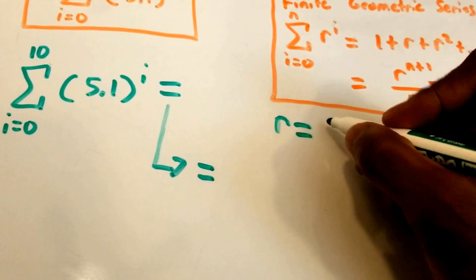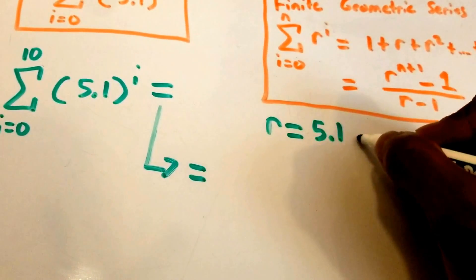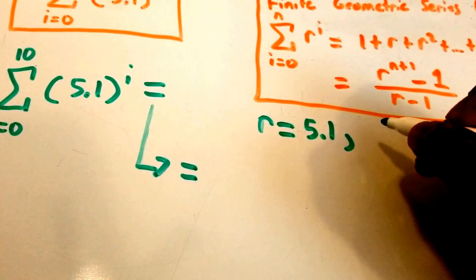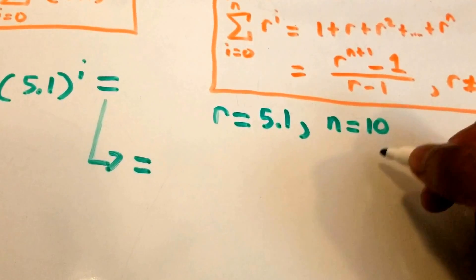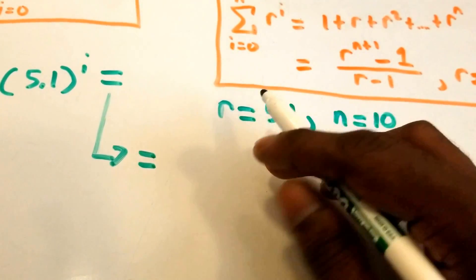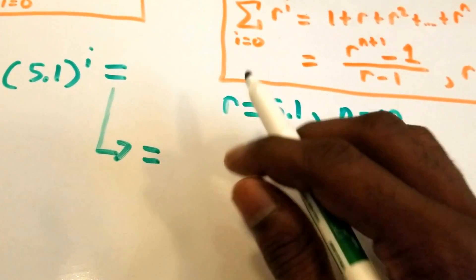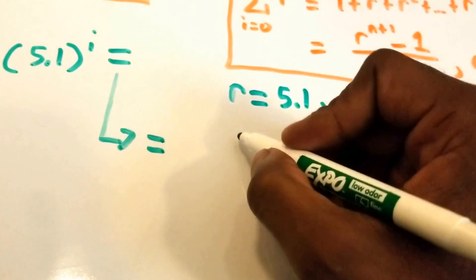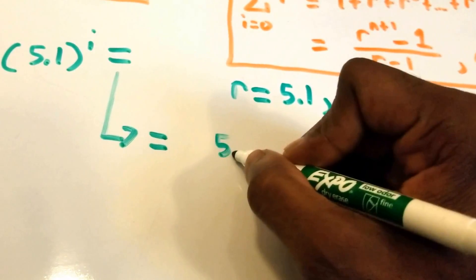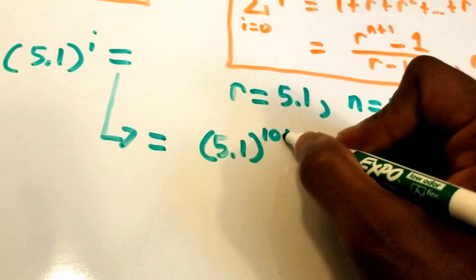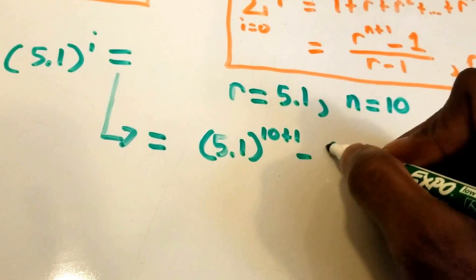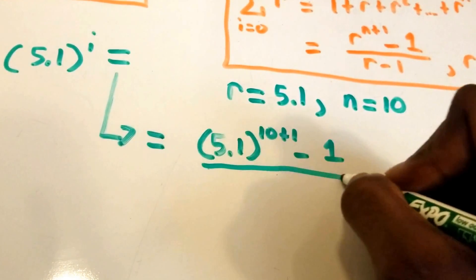So these are the values we're going to substitute in: r = 5.1 and n = 10. We're going to get (5.1)^(10+1) - 1, all over 5.1 - 1. Now we're just doing a little bit of multiplication and some subtraction.